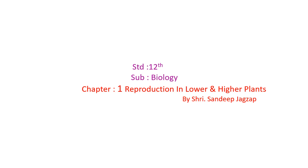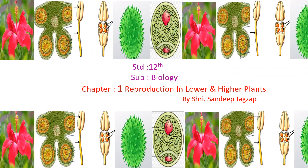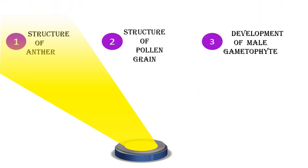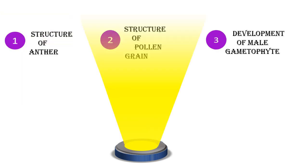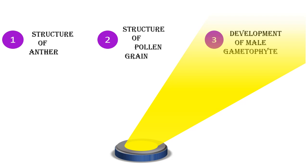Hello students. In the last session we learned about the types of reproduction and the structure of flower from chapter number one, reproduction in lower and higher plants. In this session, we are going to learn about three different topics: the first one is structure of anther, the second one is structure of pollen grain, and the third one is development of male gametophyte.